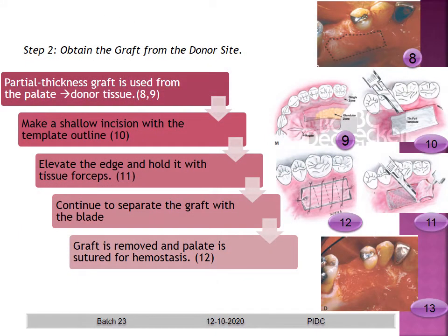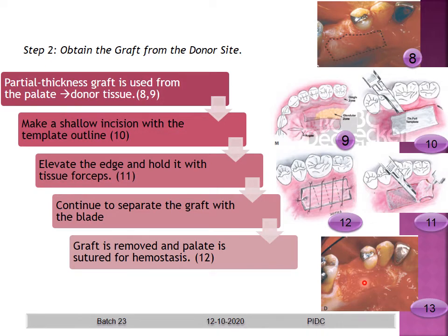Step two is to obtain the graft from the donor site. The ideal donor site is the palatal area, where a partial thickness graft can be used. Make a shallow incision using the template outline to determine how much graft is required, then elevate the edge and hold it with tissue forceps. Continue to separate the graft with the blade; then the graft is removed and the palate is sutured for hemostasis.